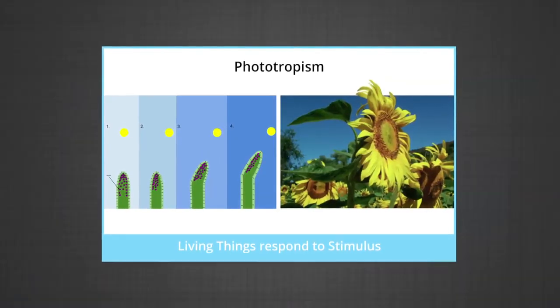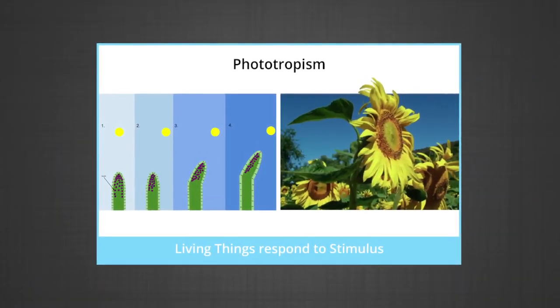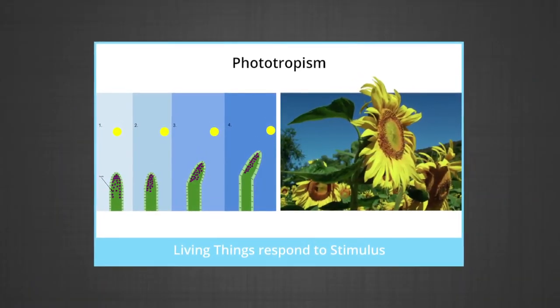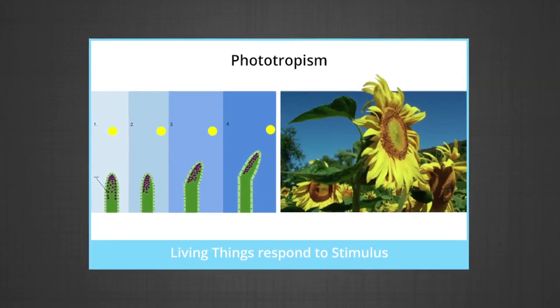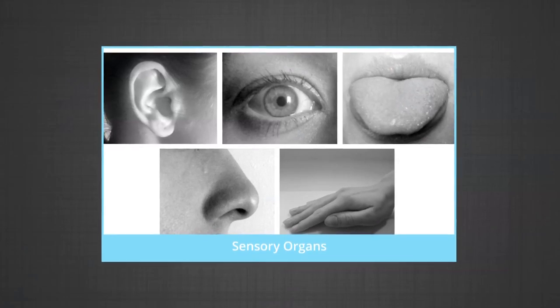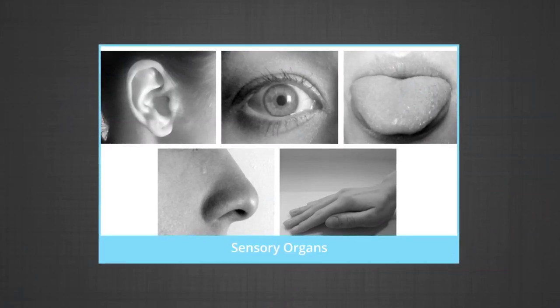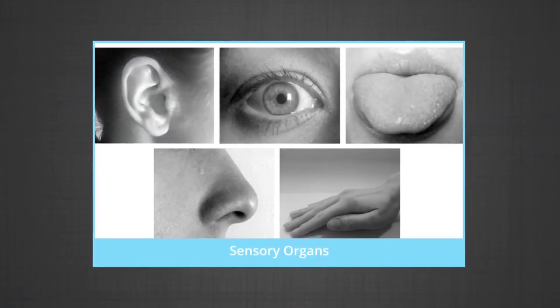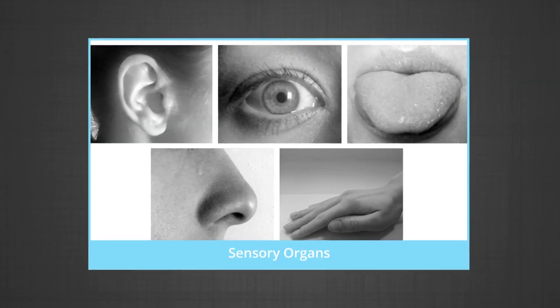All living organisms respond to stimulus. Organisms detect and respond to stimuli from their environment. A stimulus is a signal to which an organism responds. Animals respond to many types of external stimuli, such as light, sound, odour, and heat. Humans perceive the world with many senses, including sight, smell, touch, taste, and hearing.